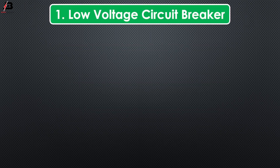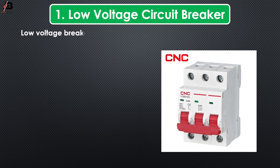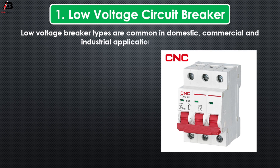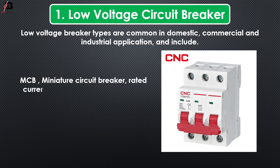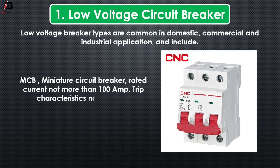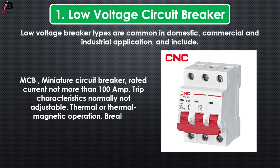Low voltage circuit breakers. Low voltage circuit breaker types are common in domestic, commercial, and industrial applications and include MCB — Miniature Circuit Breakers. Rated current not more than 100 amperes. Trip characteristic normally not adjustable. Thermal or thermal magnetic operation. Breakers illustrated above are in this category.